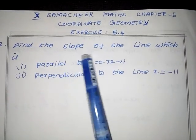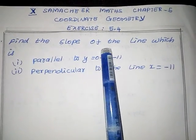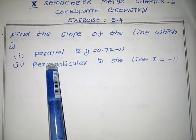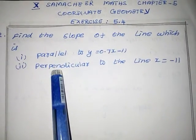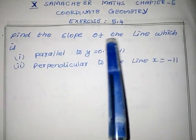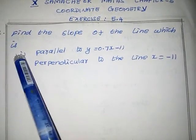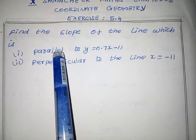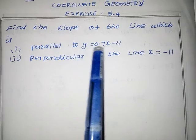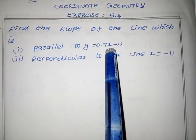Let's see the question. Find the slope of the line, which has two subdivisions. Find the slope of the line — first subdivision: parallel to a given equation.